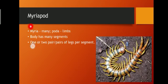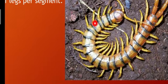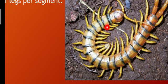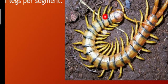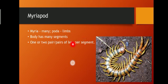Coming to the next class, Myriapoda — meaning many limbs or many legs. The body of the organism is divided into many segments and consists of many legs. One segment may contain one pair of legs, or one segment may contain two pairs of legs. This is a structure of a centipede — you can see that one segment contains only one pair of legs. That is why they are named Myriapoda.